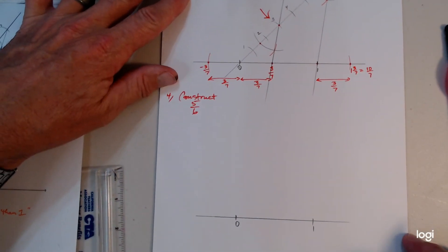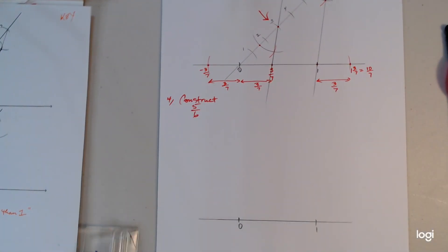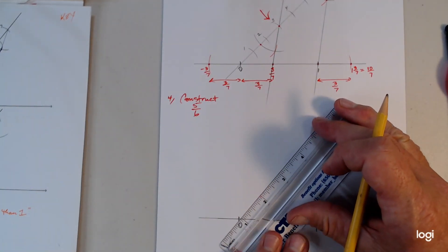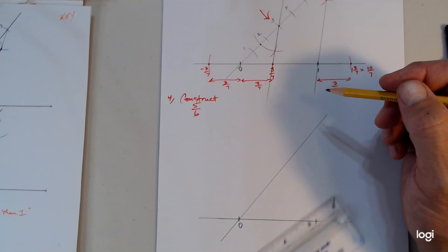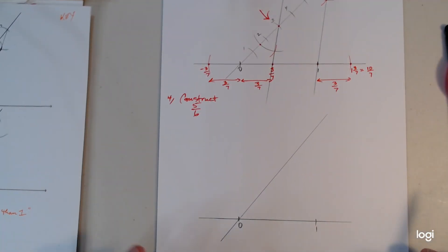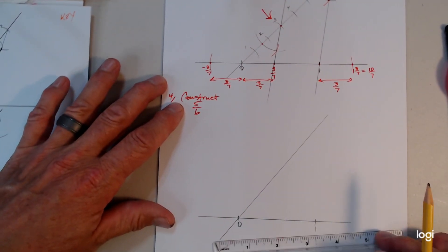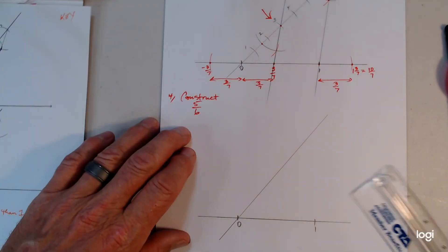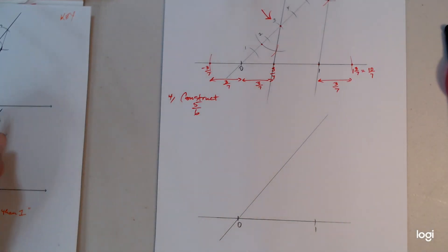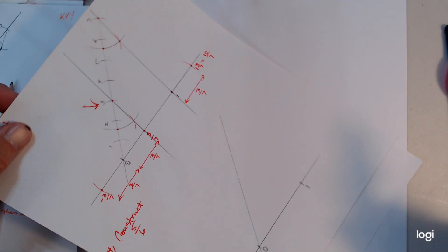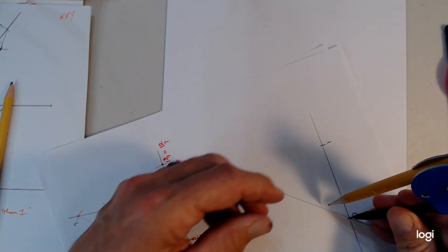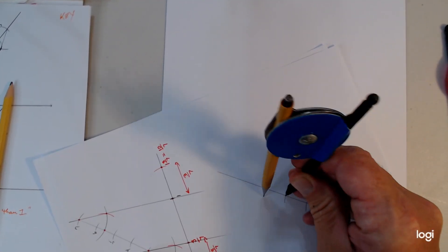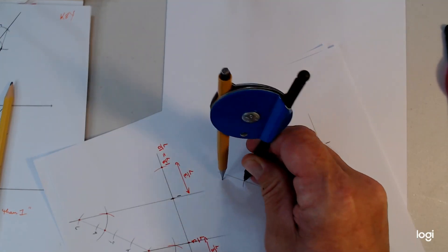Last one. Let's construct five-sixths. You start off with a transversal again. If I'm going too fast, you should be using your pause and play — it's a video, so watch, pause, and then do. Now we want five-sixths, so we want six congruent arcs. Don't make your radius too big, otherwise you'll be off the page. Count: two, three, four, five, and six.